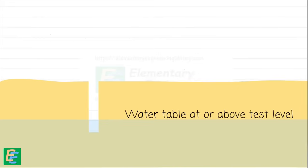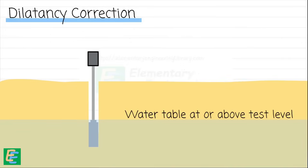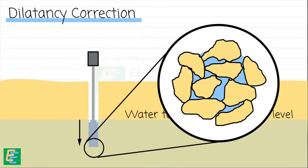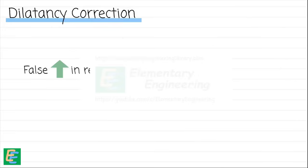In addition to this, if water table is present at or above the test level, we also need to apply another correction called dilatancy correction. When the hammer strikes the sampler, it pushes the soil. But since this happens so quickly, the water trapped between the soil particles doesn't have enough time to escape. This trapped water temporarily increases the resistance, making it seem like the soil is stronger than it actually is. As a result, we get a higher SPT number than what the soil normally indicates. This false increase in the resistance due to the trapped water is called dilatancy.